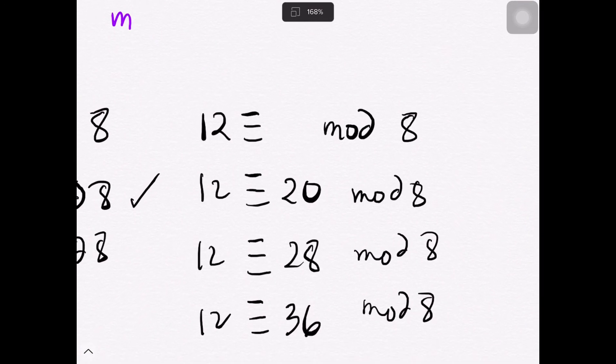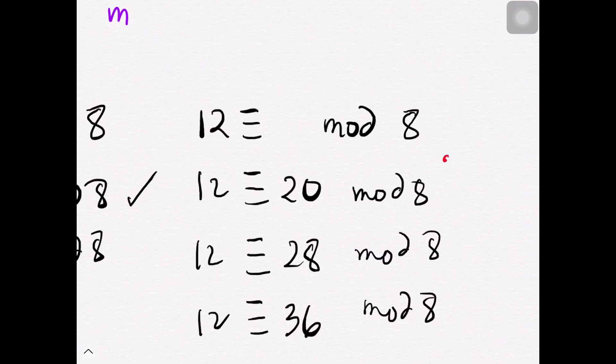And this would satisfy the definition. Notice that 8 really divides 12 minus 20, which is negative 8. 8 also divides 12 minus 28, which is negative 16. Lastly, 8 also divides 12 minus 36, which is negative 24.